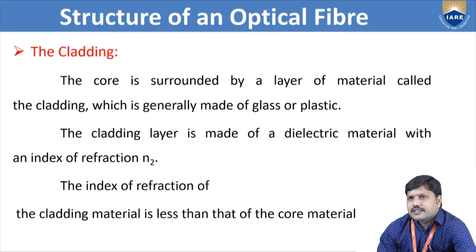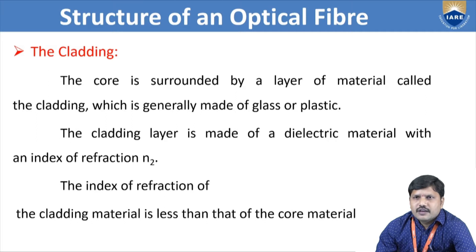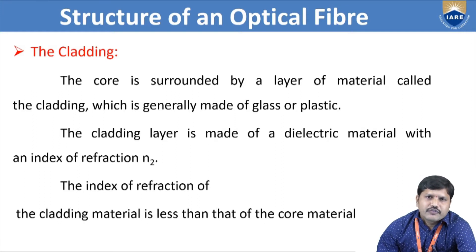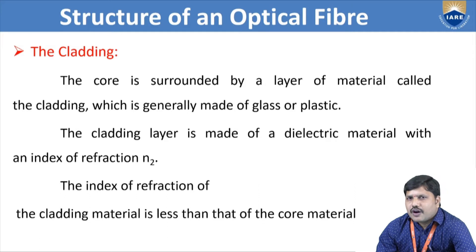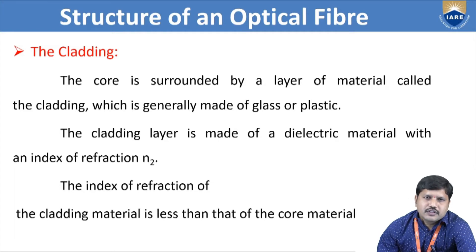The second layer is the cladding, which surrounds the core material. The cladding is also made up of glass or plastic and is a dielectric material with refractive index n2. When the refractive index of the core is taken as n1, then the refractive index of the cladding is taken as n2. The refractive index of cladding material is always less than or slightly equal to that of the core material.